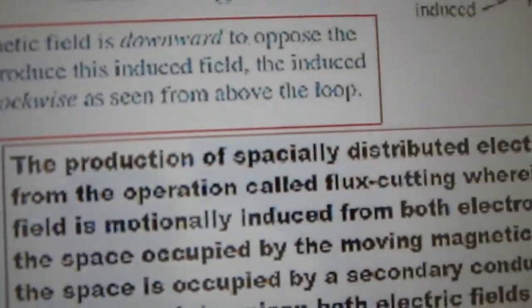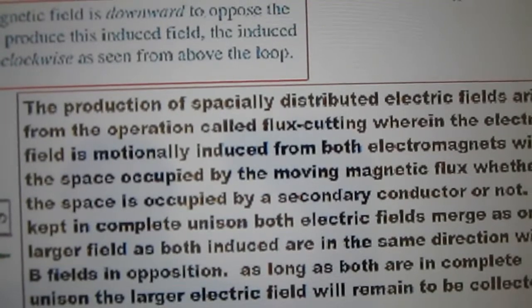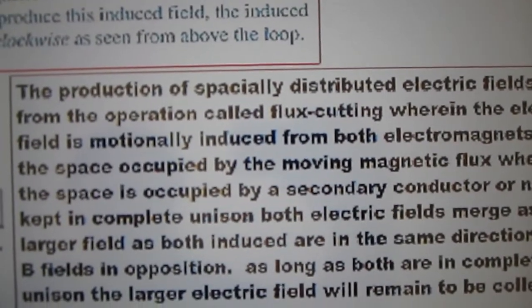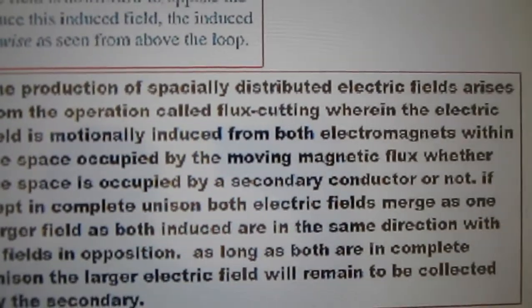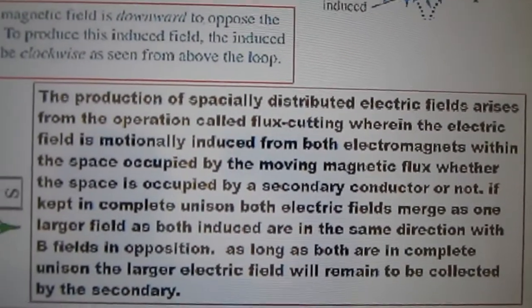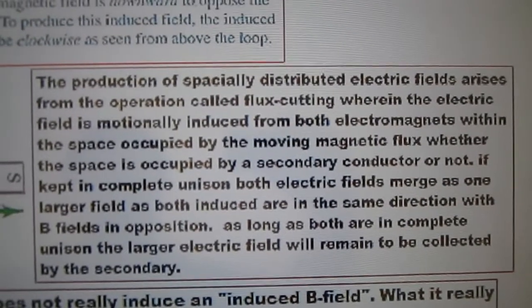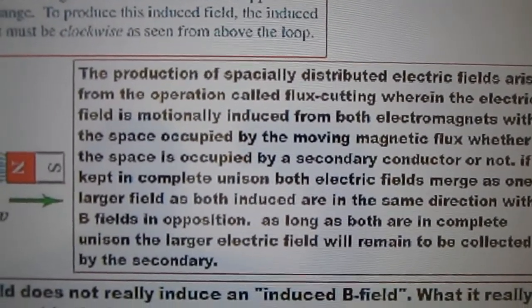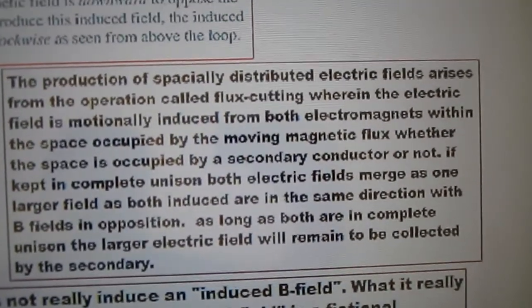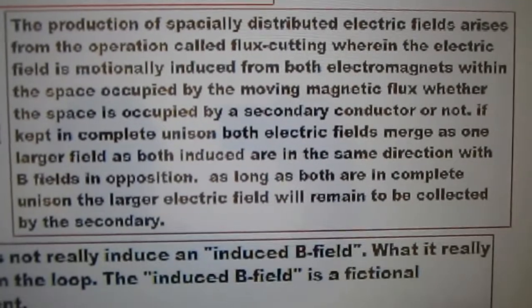The production of the spatially distributed electric fields arises from flux cutting, wherein the electric field is motionally induced from both electromagnets within the space occupied by the moving magnet, whether the secondary conductor is there or not. If kept in complete unison, the electric fields merge as one larger field, as both induced fields are in the same direction with B-fields in opposition. As long as both are in complete unison, the larger electric field will remain to be collected by the secondary.